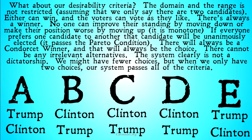No one can improve their standing by moving down or make their position worse by moving up, so the system is monotone. If Trump were to move up on B, C, or D, he would win; if Clinton were to move down on B, C, or D, she would lose. If everyone prefers one candidate to another, that candidate will unanimously get every single first place vote, so it passes the Pareto condition. There will always be a Condorcet winner, and that will always be the choice, because there's only one pairing — one relationship to look at. And there can't be any irrelevant alternatives, because we're only looking at two candidates, so no third-party candidate can move around and change positions.